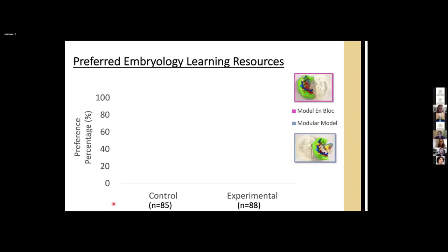After they interacted with both resources, students selected their preferred learning model. Both control and experimental groups selected the modular model to be their preferred model, even though the results showed the higher learning outcomes for spatial items from interaction with the model en bloc, which is the single-piece model.